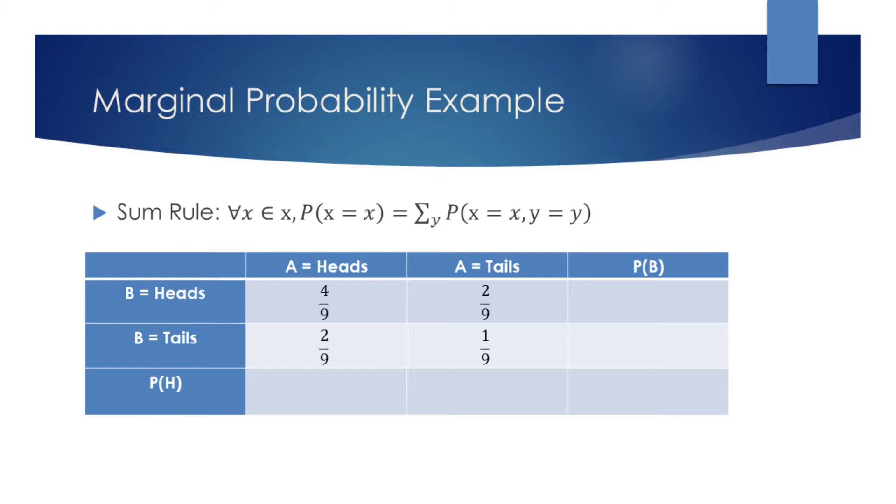For example, the probability for both coins A and B to display tails is 1 9th. We will now try to find the individual probabilities for A and B to either display heads or tails.